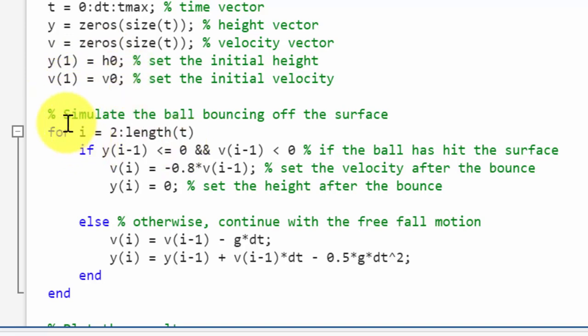Next I am going to simulate the effect. I have used a for loop: for i equals 2 (because 1 I have already mentioned as the initial condition) to the length of t. If y(i-1), that is the previous height, is less than or equal to 0 and the velocity of the previous iteration is less than 0, which means that if these two are satisfied then the ball has hit the surface. If it hits the surface then the next velocity is calculated using the restitution equation: minus 0.8 times v of previous iteration, and y, the height, is equal to 0 because the ball is in contact with the surface.